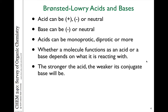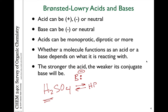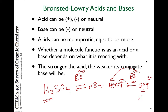We could have monoprotic acids such as HCl. Diprotic acids like sulfuric acid, H₂SO₄, have two hydrogens that could come off. It can react with a base to take off one proton, giving HB⁺ and HSO₄⁻. That species can then react with another base to take the other proton off, forming SO₄²⁻ plus another HB⁺.